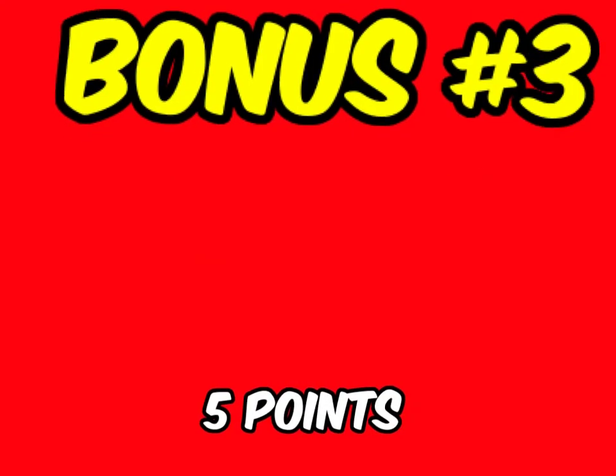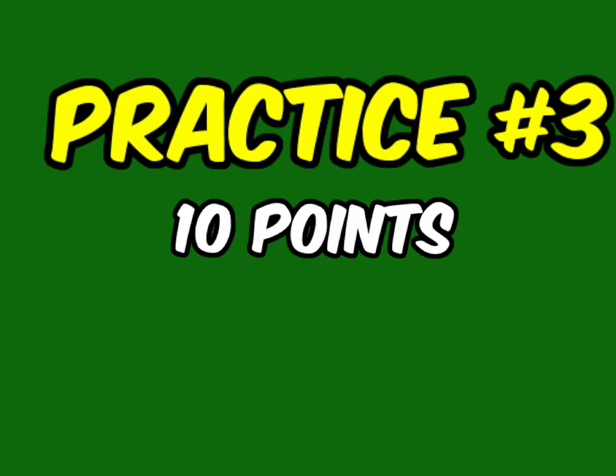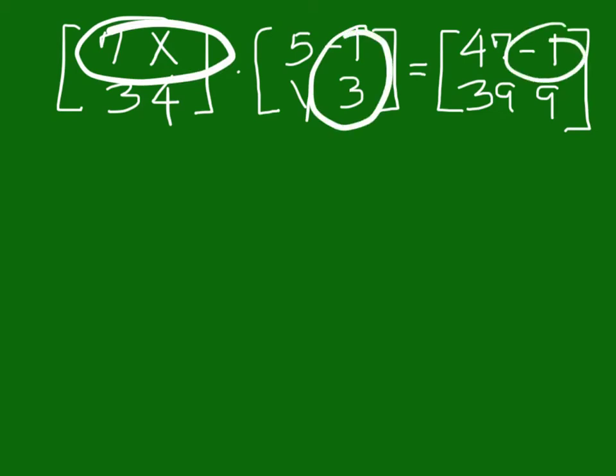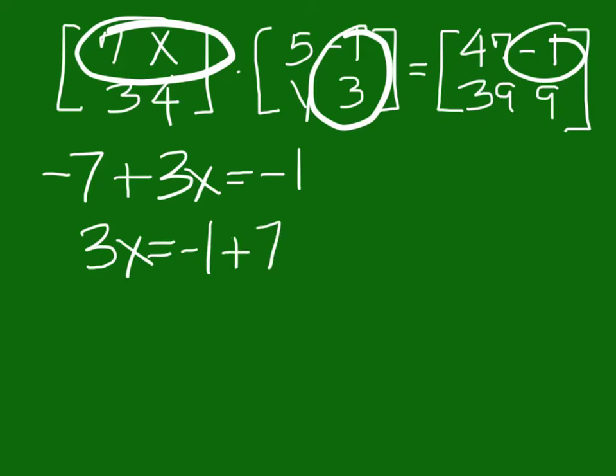Okay, give it a shot. On this one, we'll go here, here, and here to come up with a negative 7 plus 3X equals a negative 1. So that would be 3X equals negative 1 plus 7. That's going to be a 6. So you'll come up with a 2.